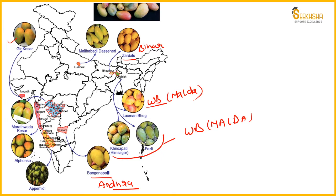Next is Apimidhi, which belongs to Karnataka - specifically the Shimoga, Uttar Kannad, Dakshin Kannad, and Chikmagalur regions. Then we have Alphonso and Marathwada Kesar - this particular variety also belongs to Maharashtra. These are some important GI-tagged varieties you should remember along with their states.